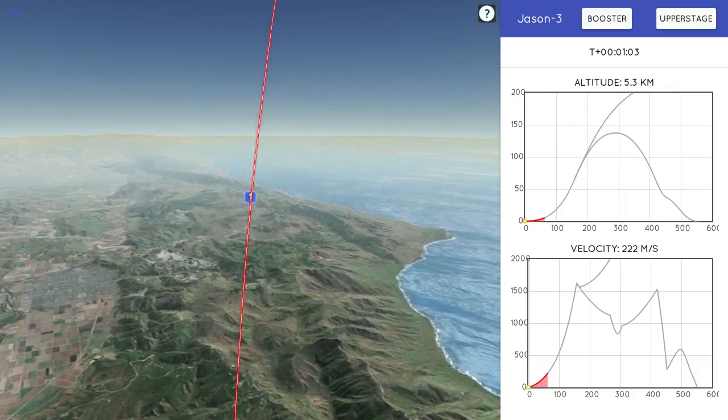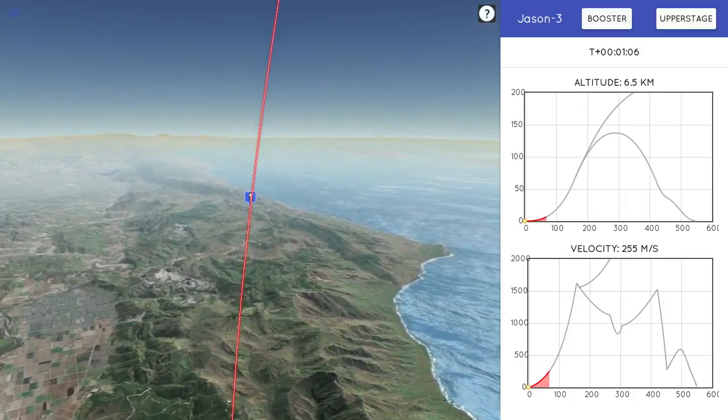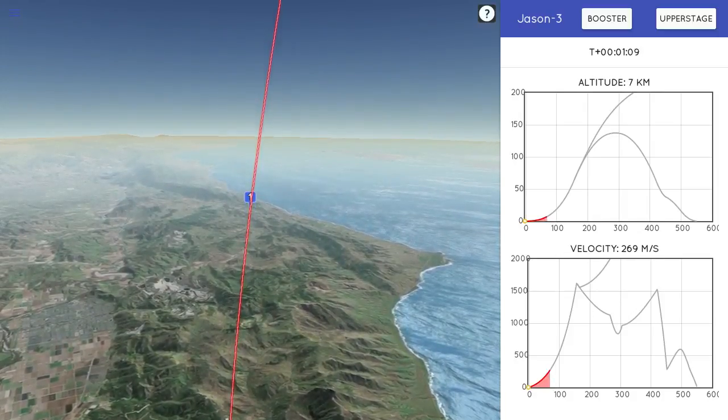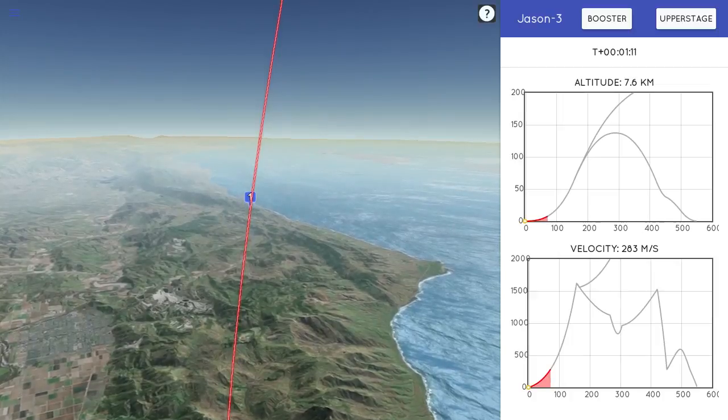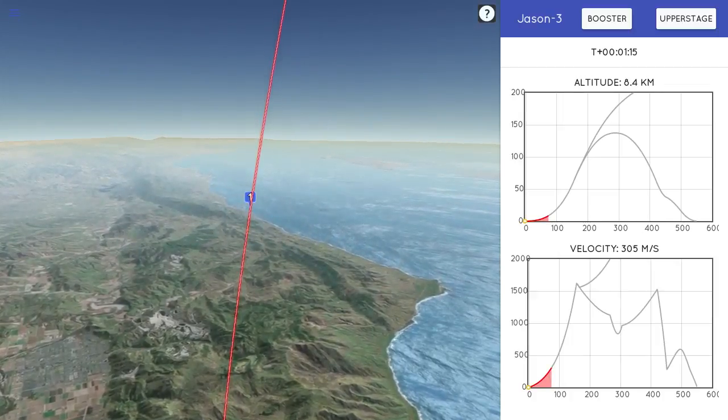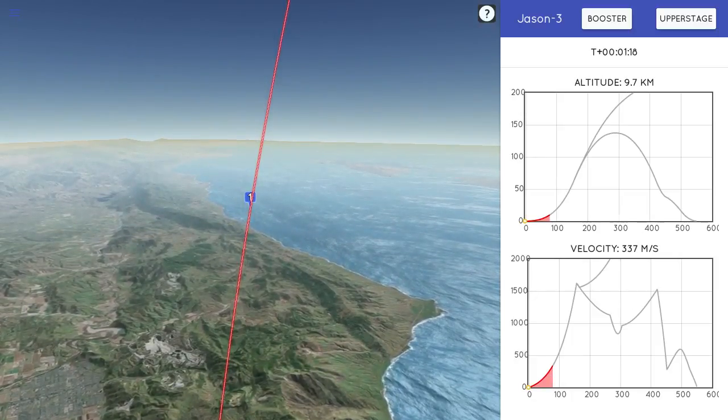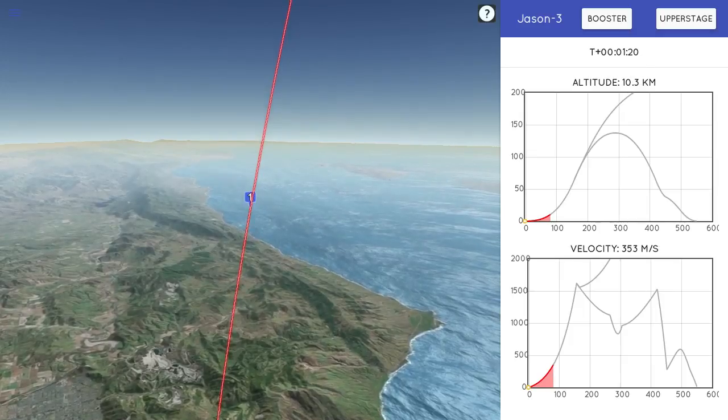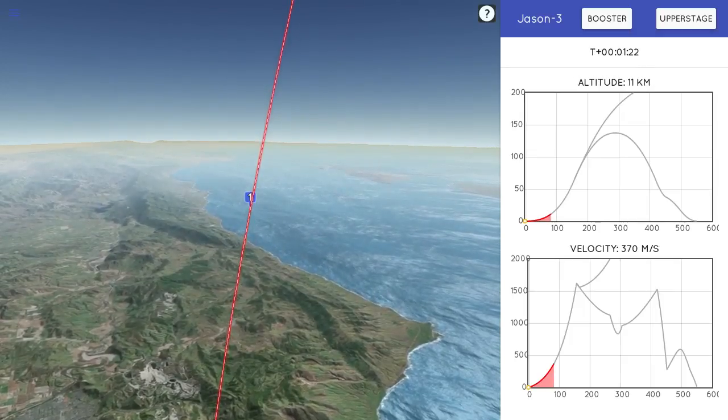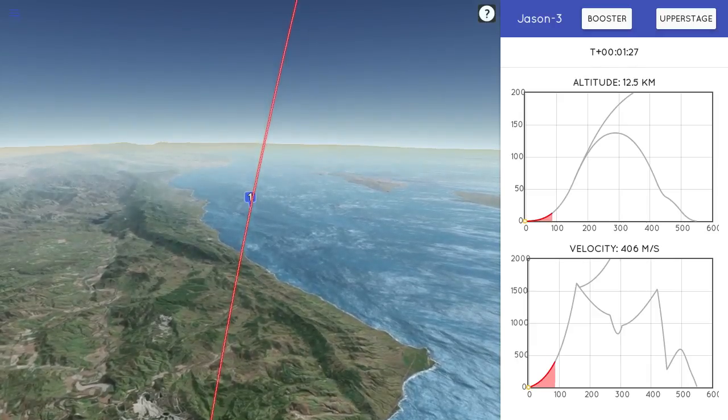The vehicle altitude is 6.5 kilometers. Velocity is 280 meters per second. Downrange distance 1.1 kilometers. And the vehicle is just transitioning into the supersonic regime. It's going faster than the speed of sound right now. And shortly we're going to reach max Q, or the maximum aerodynamic pressure. It's one of the highest stressed states on the rocket.